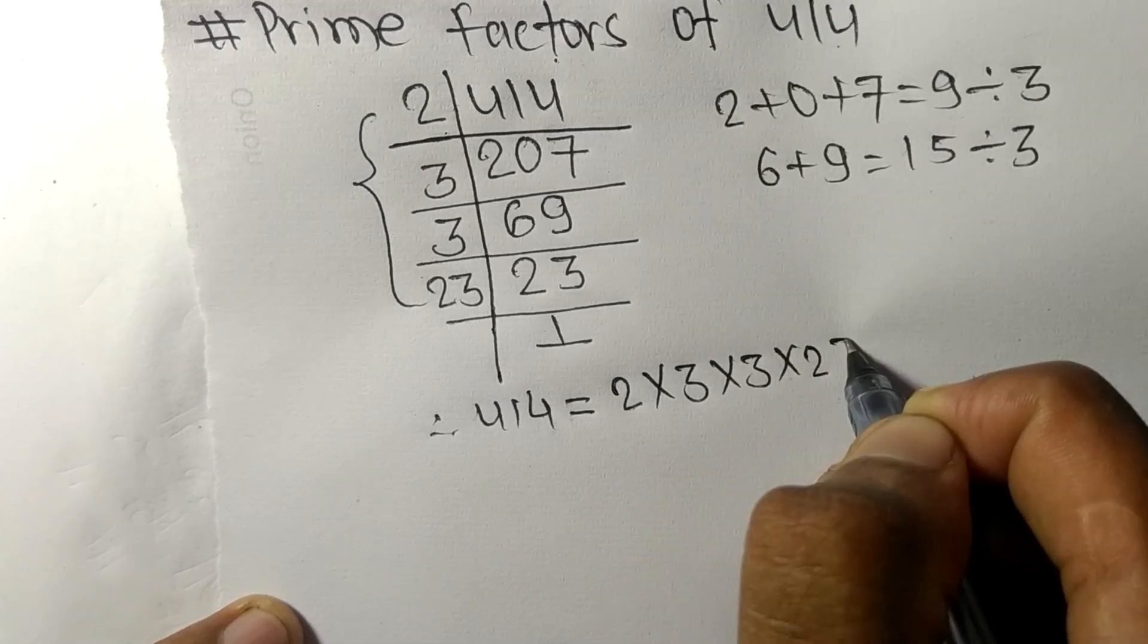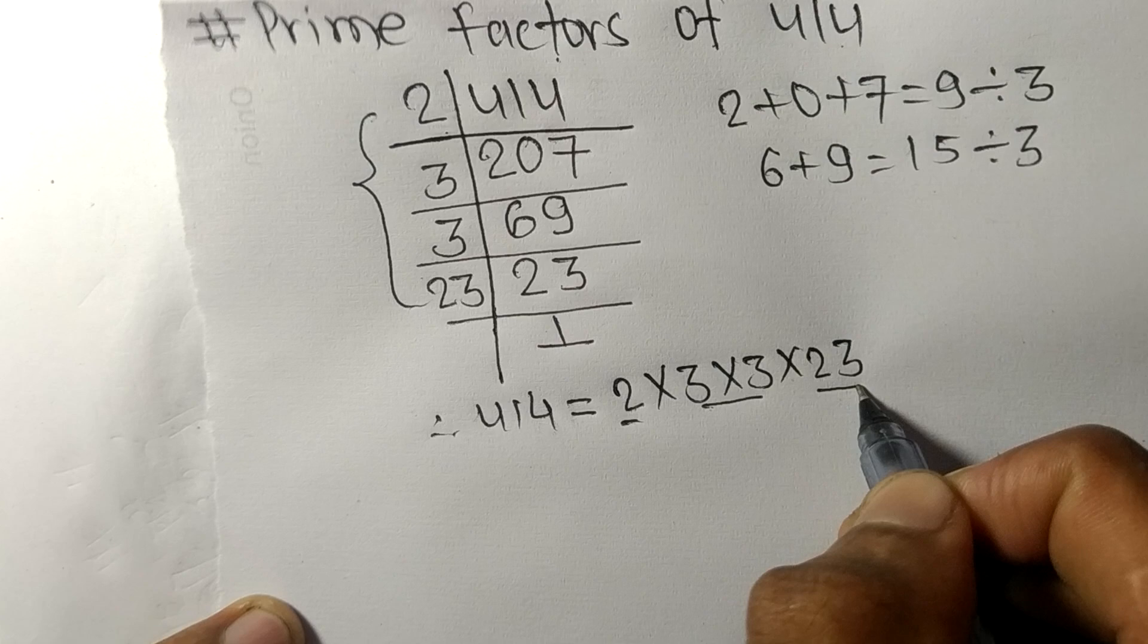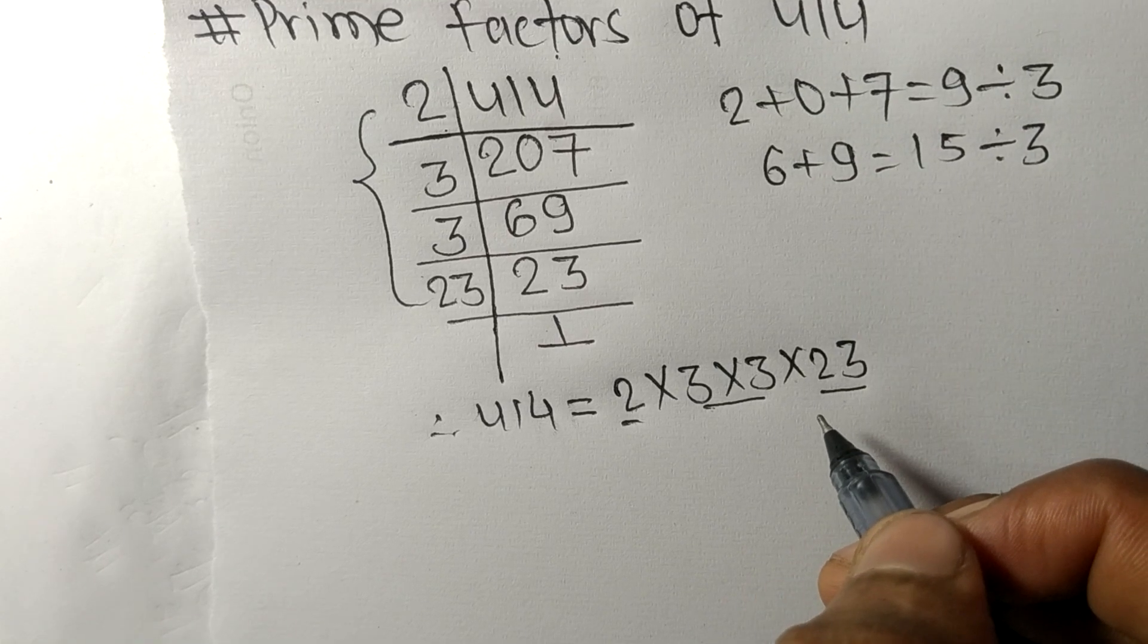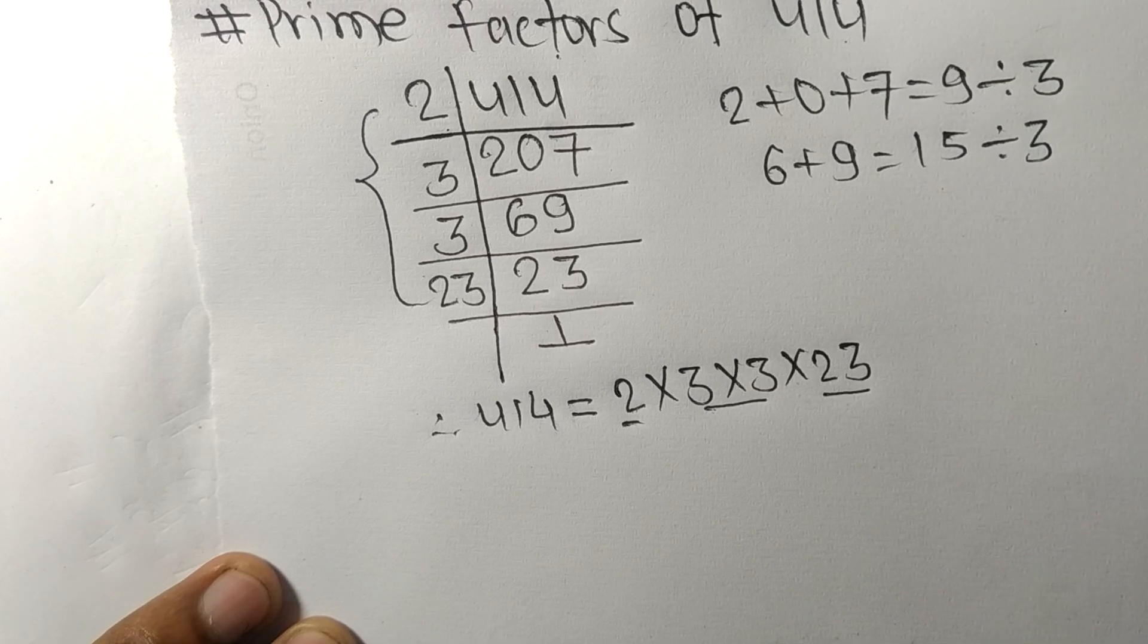So 2, 3, and 23 are the prime factors of 414. That's all for today, and thanks for watching.